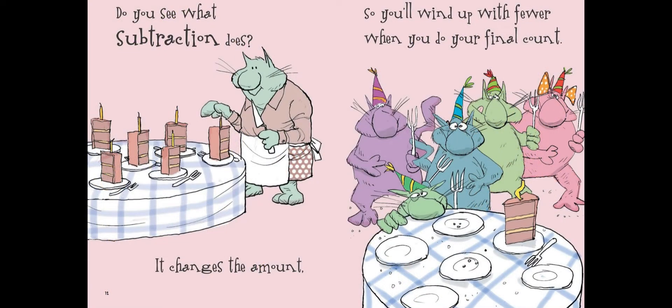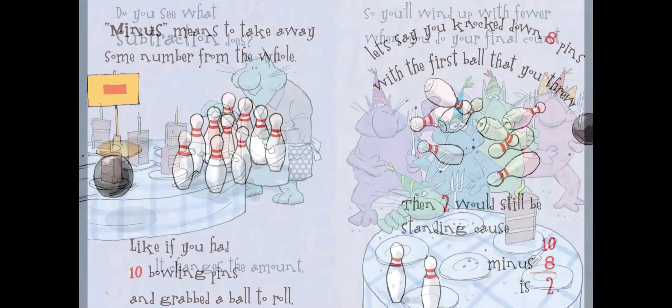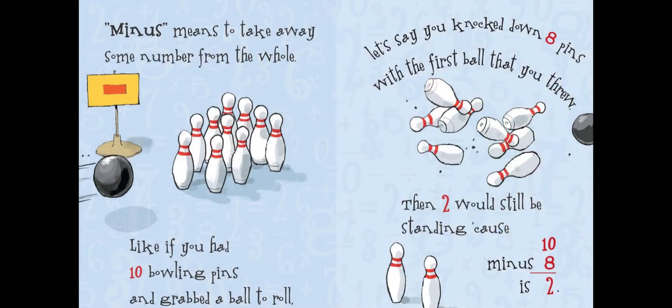Do you see what subtraction does? It changes the amount, so you wind up with fewer when you do your final count. Minus means to take away some number from the whole, like if you had 10 bowling pins and grabbed a ball to roll. Let's say you knocked down eight pins with the first ball that you threw, then two would still be standing because 10 minus 8 is 2.